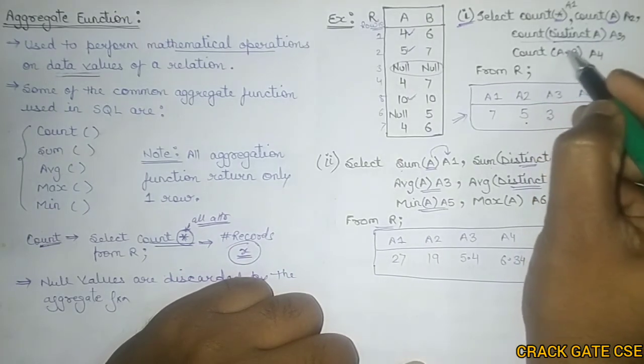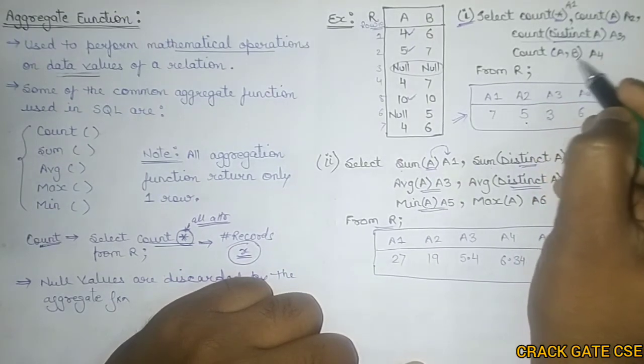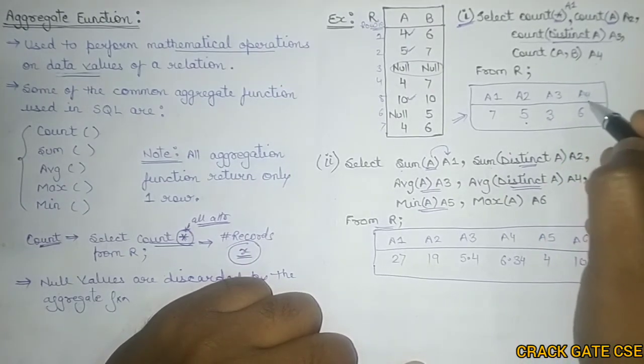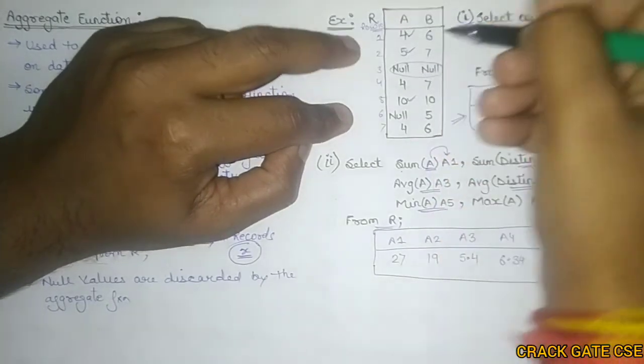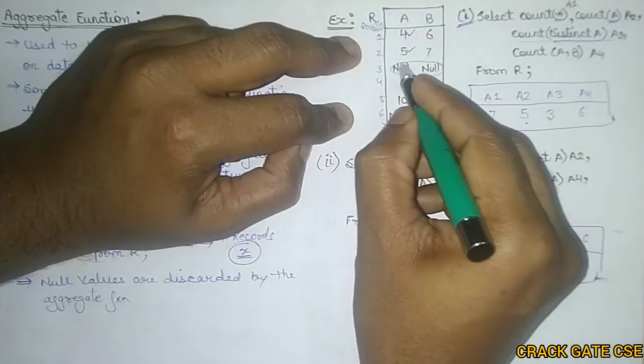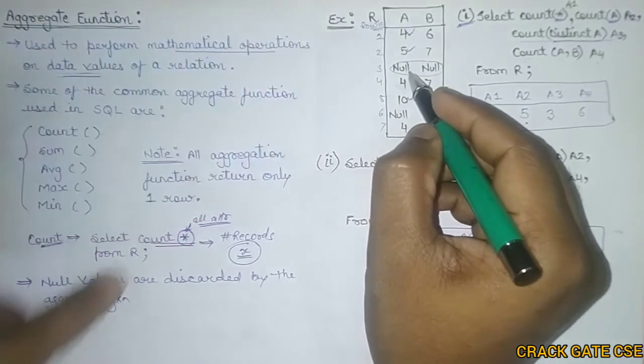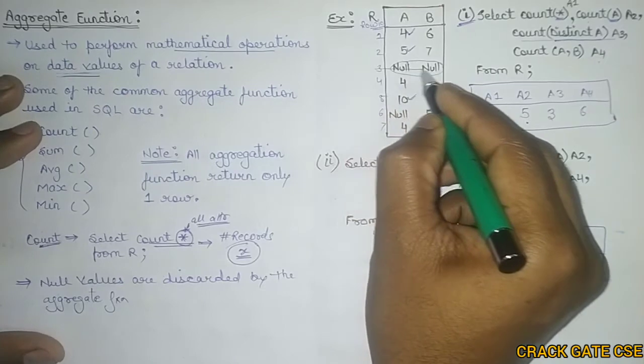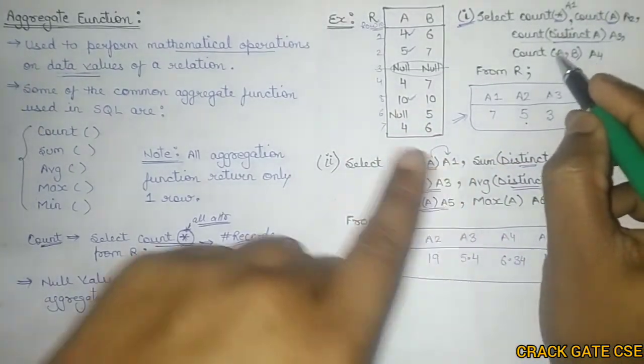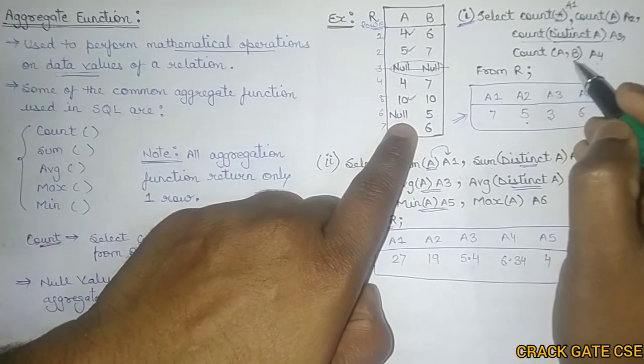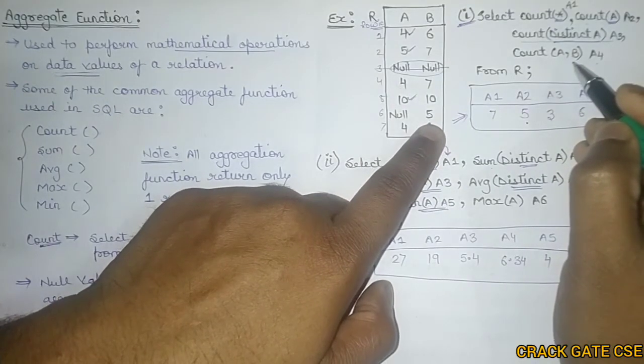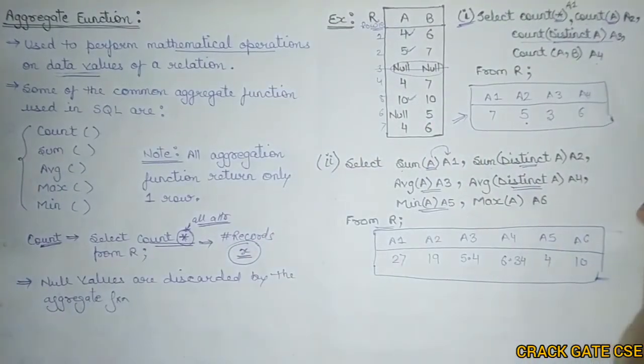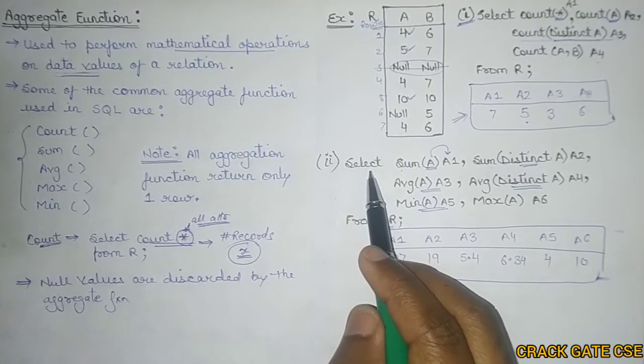Similarly, we have to count the AB pair and place the respective value in A4 attribute. So I am placing A4 attribute as 6, because I am having 7 records but one record is completely null. And I already told you that null values are discarded by the aggregate function. If the complete pair is null, it will be discarded. If a single value is null and in other attribute we are having a value, it will not be discarded. That's why 7 minus 1, 6 is stored here.